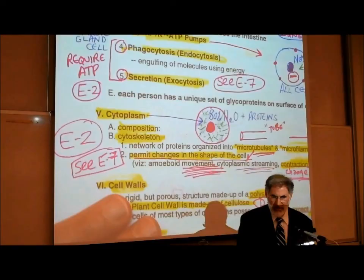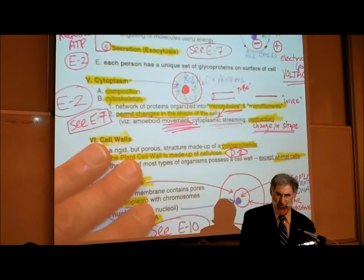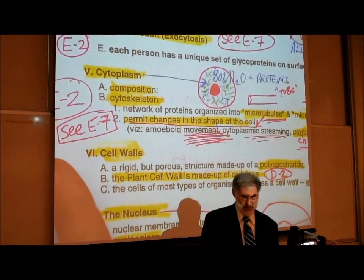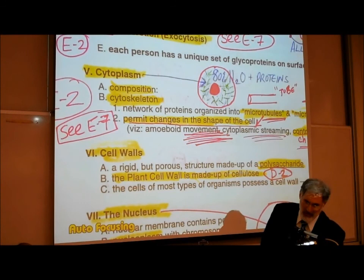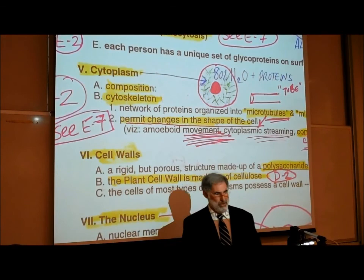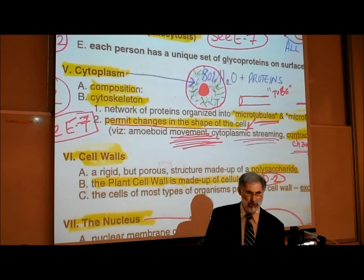Now let's talk about the cytoplasm of the cell. The cytoplasm inside the cell is mostly water — about 80% water. After water, the next major chemical making up cytoplasm is proteins. So cytoplasm is mostly, in terms of composition, water and protein. Anything made up mostly of water and protein will have the consistency of jello.